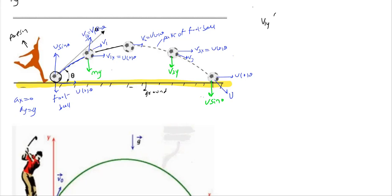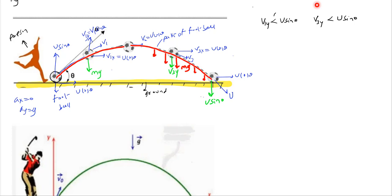v1y will be less than u sinθ. Because of the weight mg, the vertical component of the projectile will keep on changing. When the ball moves upward, the vertical component decreases. When it moves from the highest point to the point of striking, it decreases on the way up.